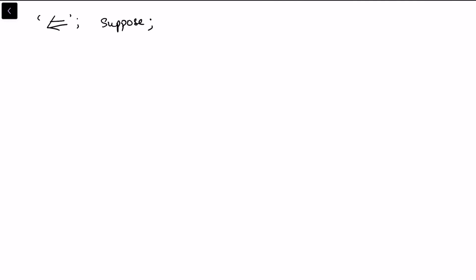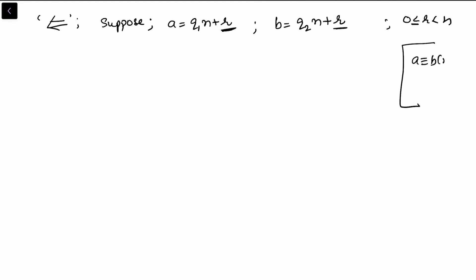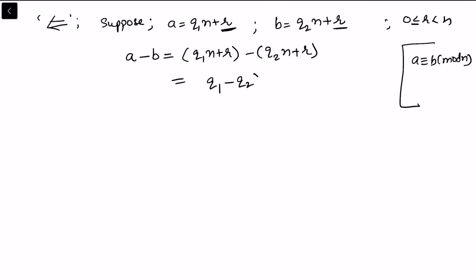Now we prove the other direction. We assume that a and b leave the same remainder. Suppose a equals q1·n plus r and b equals q2·n plus r, because the remainder has to be the same. Of course r lies between 0 and n, inclusive. We need to show that a is congruent to b modulo n, so we find the expression for a minus b: this is q1·n plus r minus (q2·n plus r).